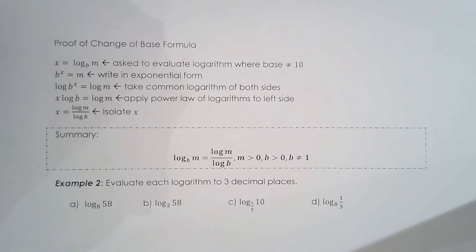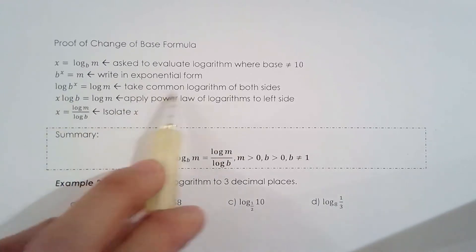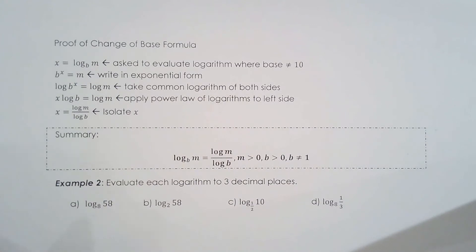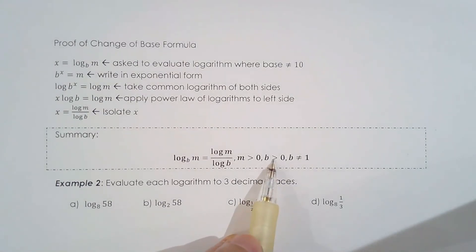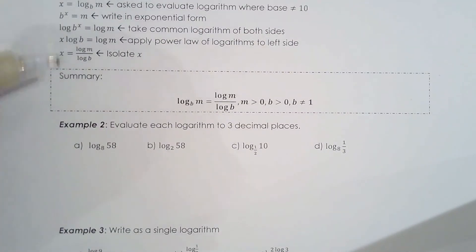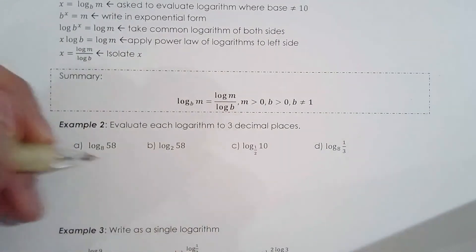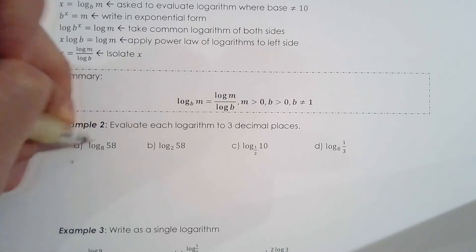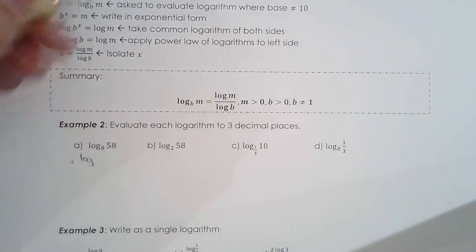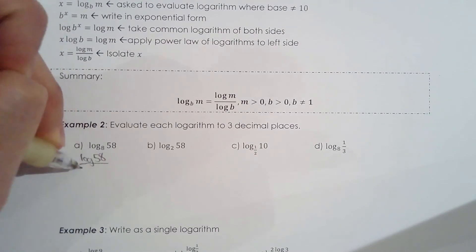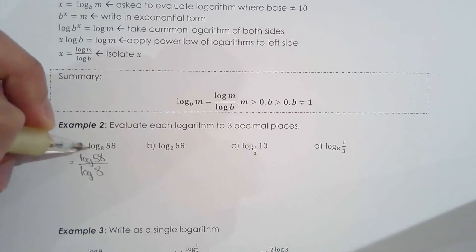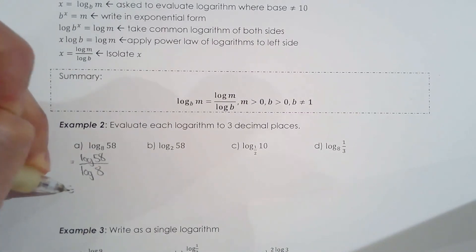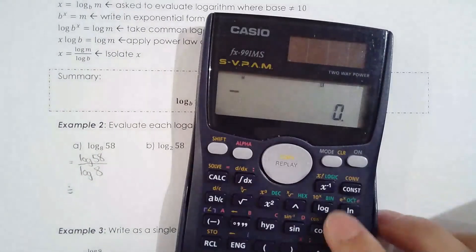Why change to base 10? Because your calculator can work with base 10. But you don't have to change to base 10 — you could take log base 2 of both sides and change the base to 2, or 3, 4, 5, 6, anything greater than 0 and not 1. For this handout, we're changing to base 10 to evaluate. So log base 8 of 58 equals log 58 over log 8 — I've applied the change of base formula, and now I can evaluate it.